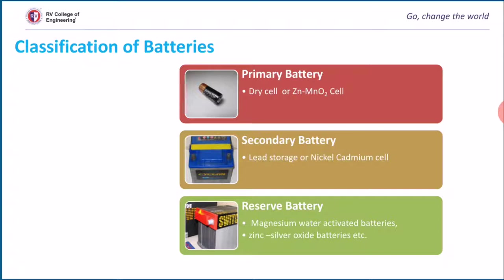In secondary batteries, cell reactions are reversible. It consists of two processes: charging and discharging. During discharging, electro-active material is converted to electro-inactive material. During charging, electro-inactive material is converted to electro-active material once current is applied in the opposite direction.